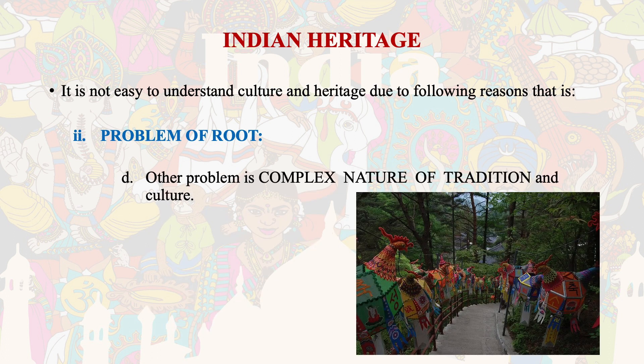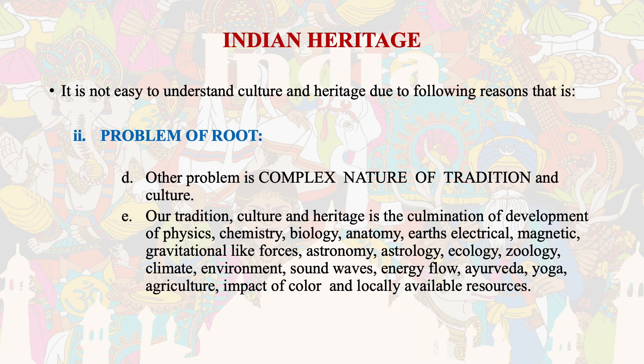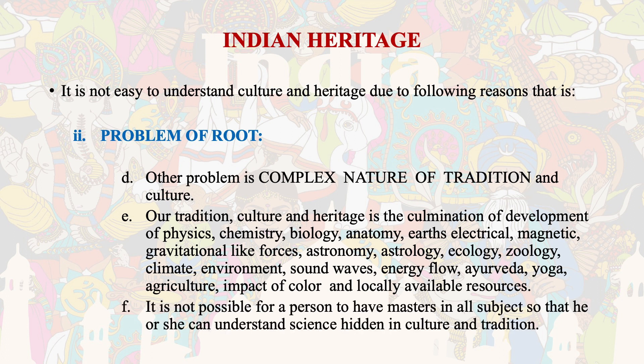Another problem is the complex nature of our tradition and culture. Our tradition, culture and heritage is the culmination of development in physics, chemistry, biology, anatomy, earth energy, electrical and magnetic and gravitational forces, astronomy, astrology, ecology, zoology, climate, environment, sound waves, energy flow, airflow, agriculture, and the impact of colour and locally available resources. It is not possible for a person to have mastery in all subjects so that they can understand the science hidden in culture and tradition.